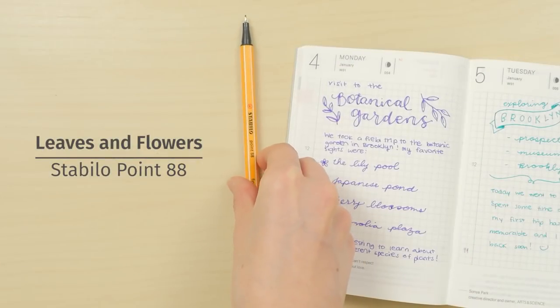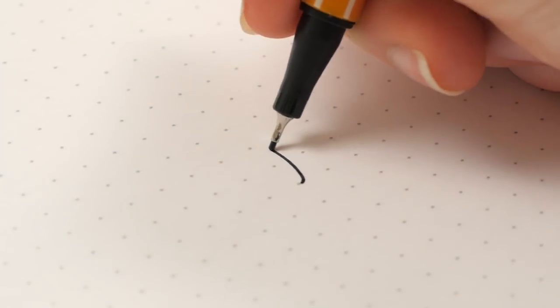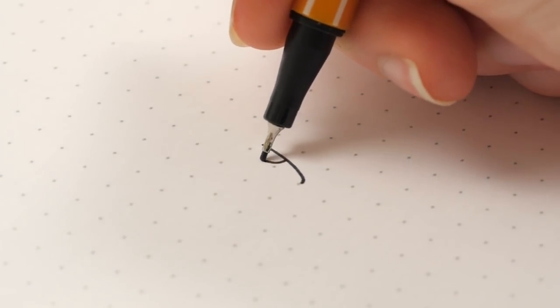Adding leaves and flowers gives hand lettering a sweet and rustic feel. To draw a basic leaf, draw a line and then make a teardrop shape.